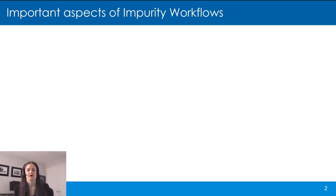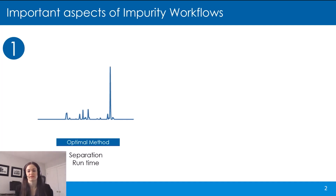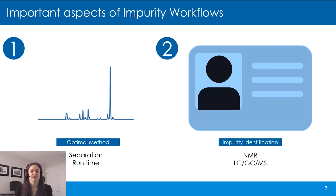The first area is the development of an optimal analytical method — whether it's GC or LC — where software can help in optimizing things like separation of components and runtime. The second area is identification of impurities, which is generally done by NMR and MS. For today, we're going to consider the MS tools that we have, involving the resolution of the instrument as well as fragmentation.